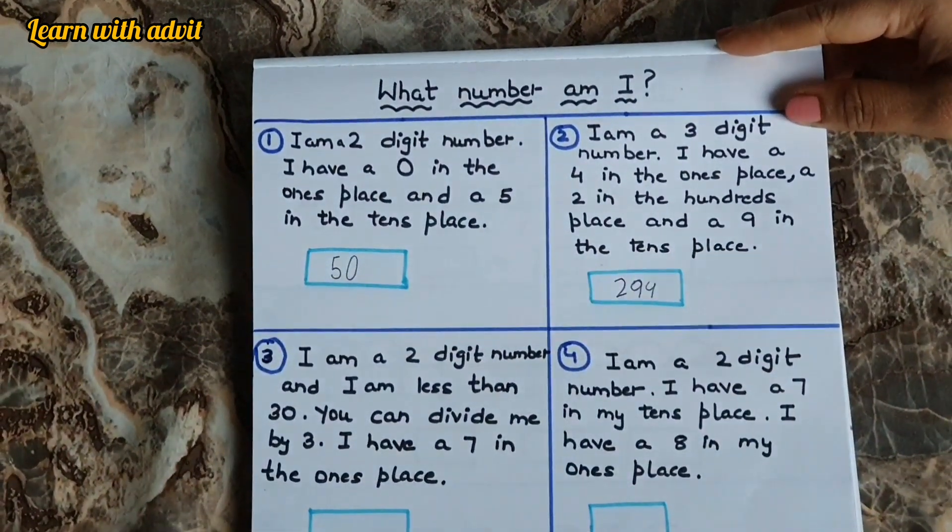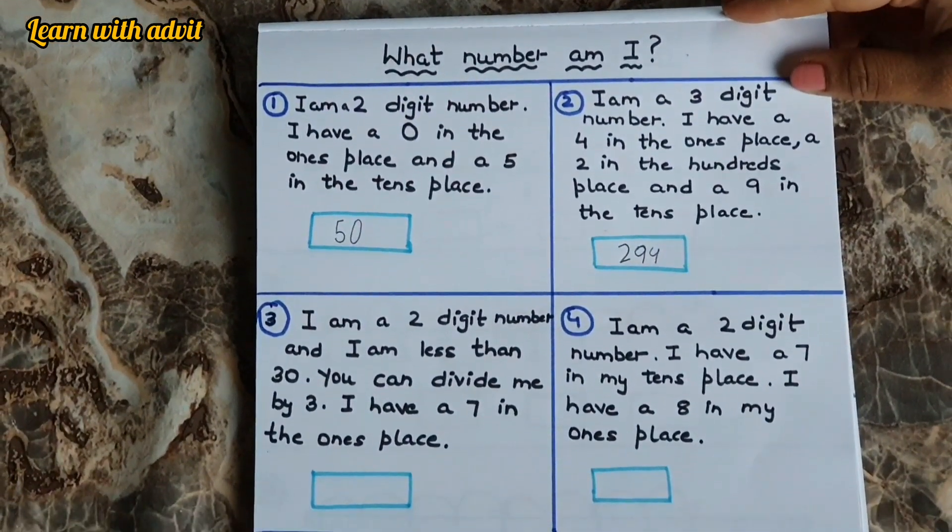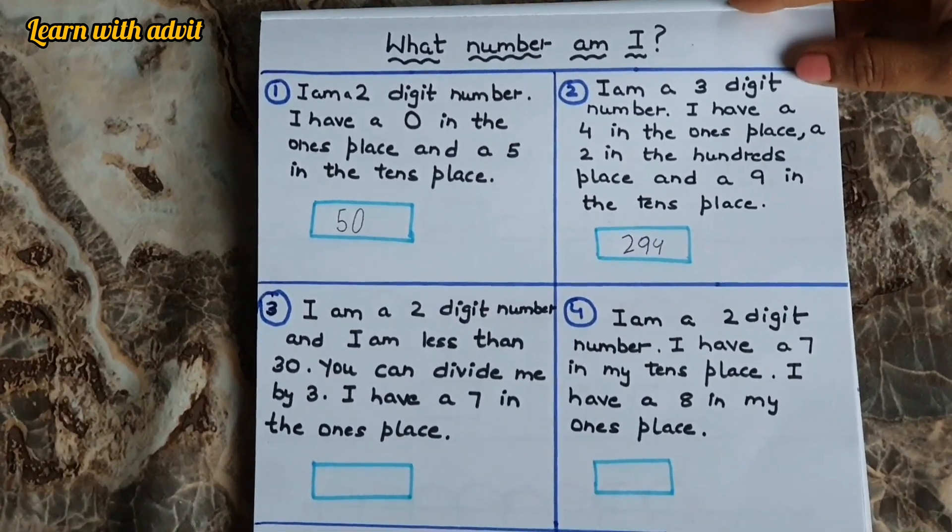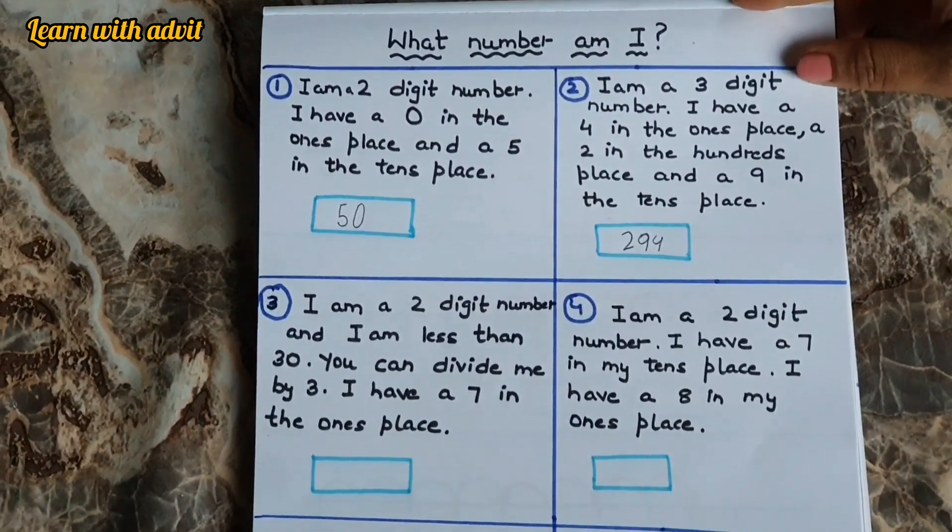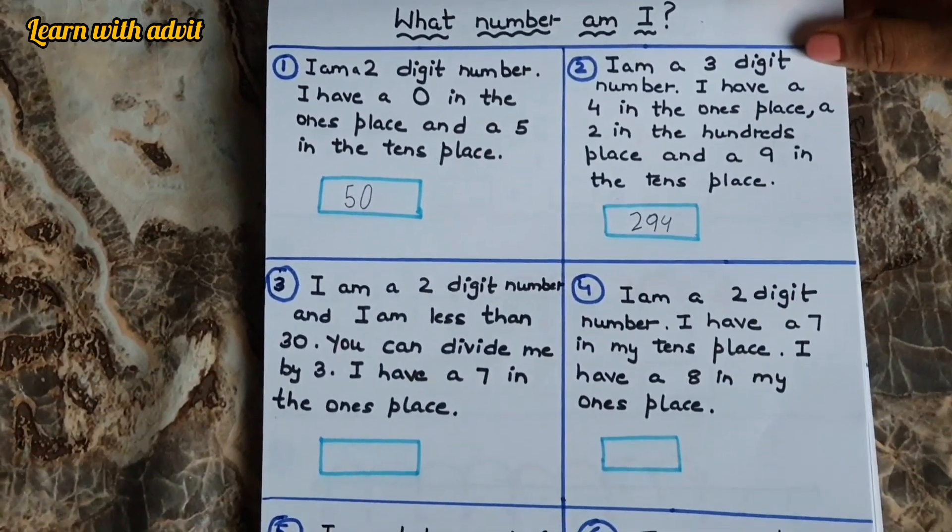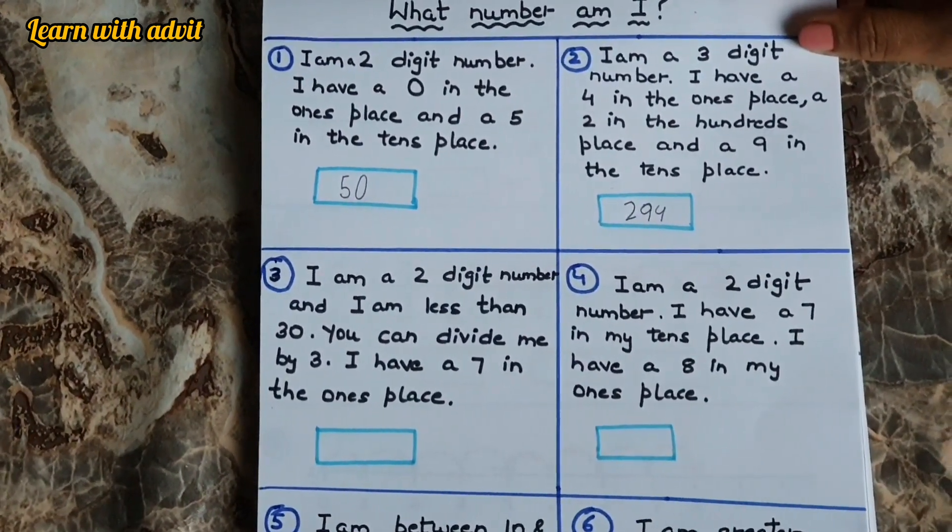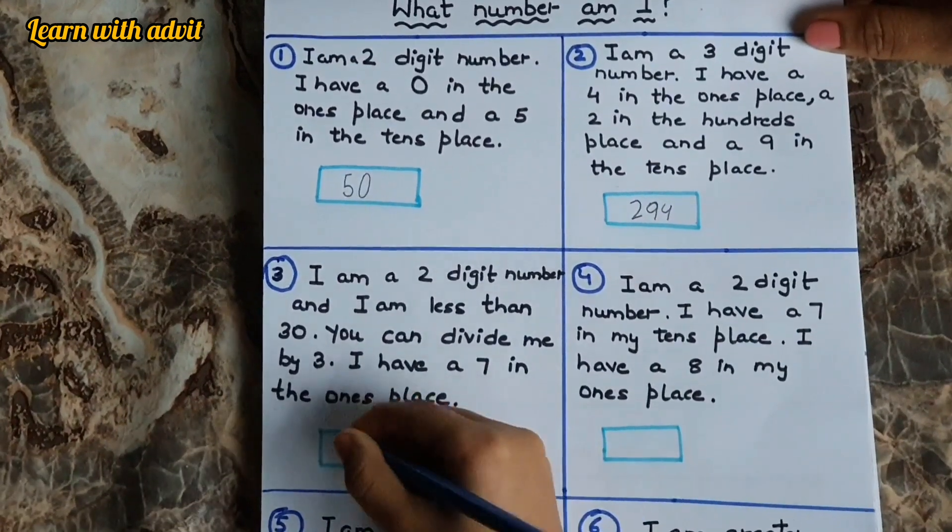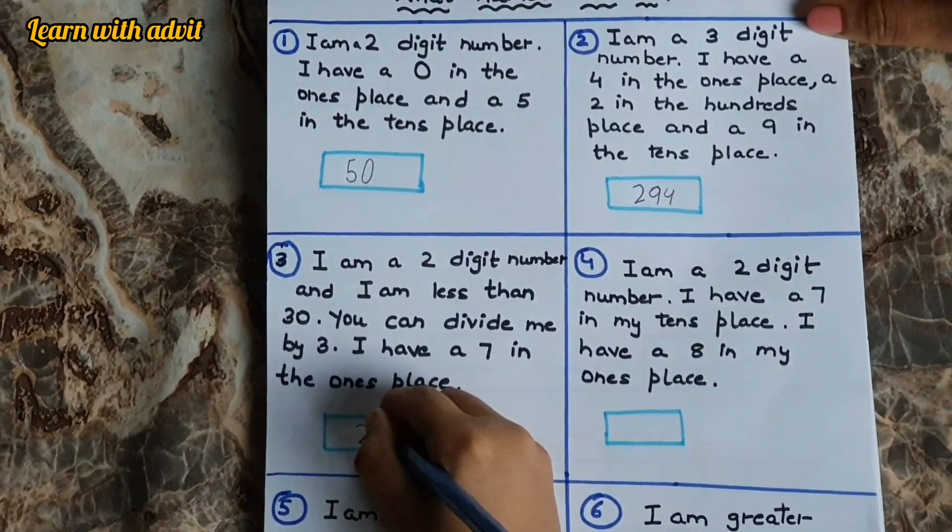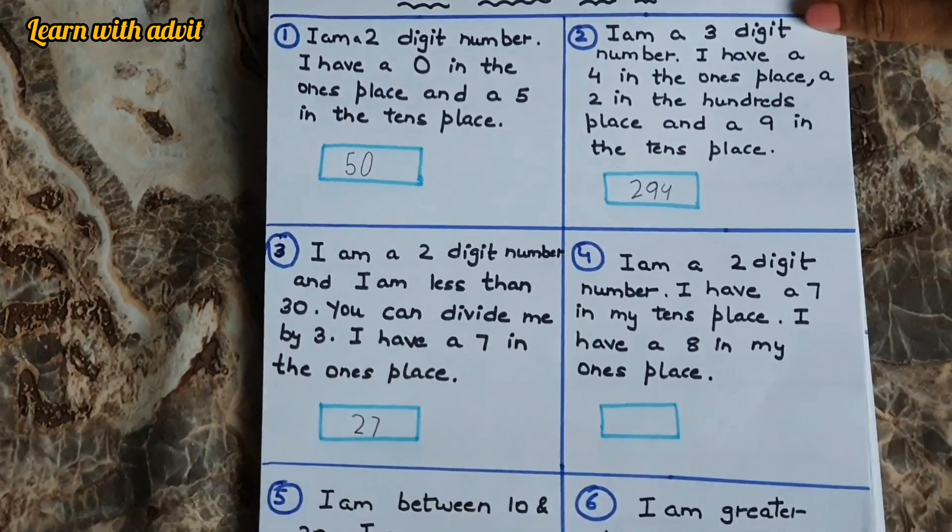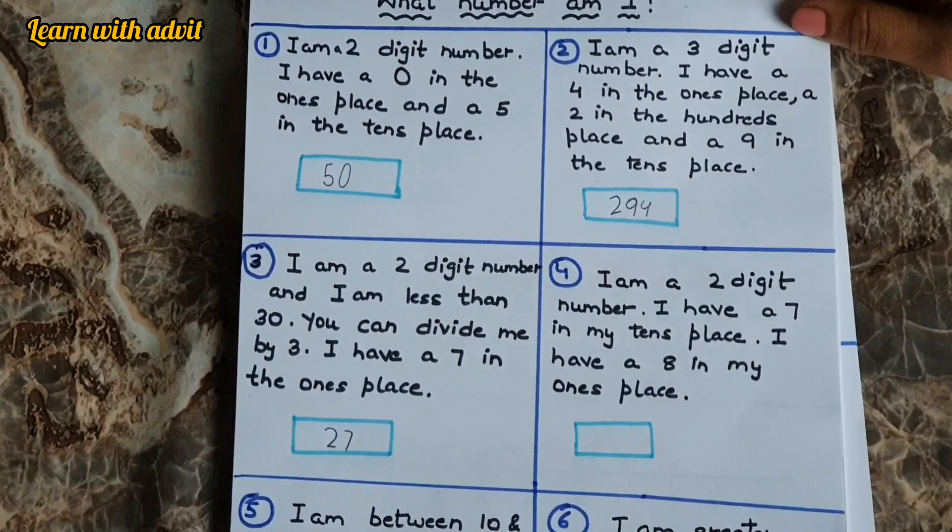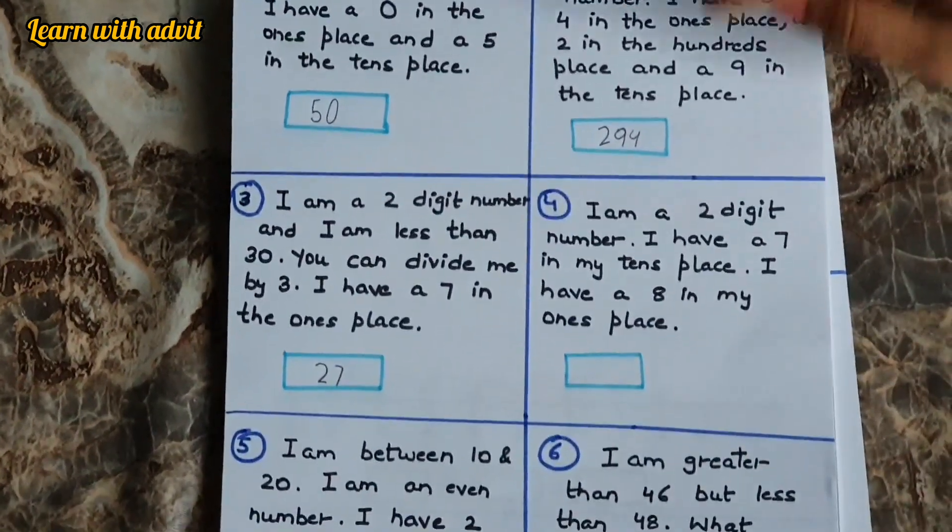I am a 2 digit number and I am less than 30. You can divide me by 3. That means it comes in a table of 3. I have 7 in the ones place. Number is twenty-seven. 27 divided by 3 is 9, times 3 is 27.